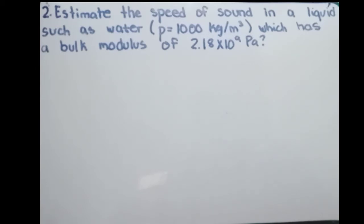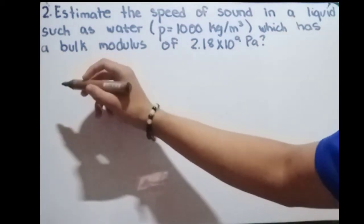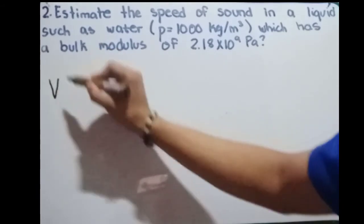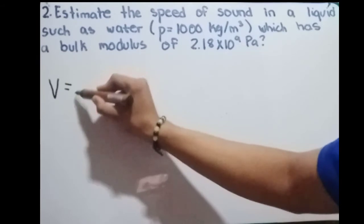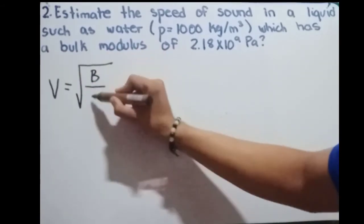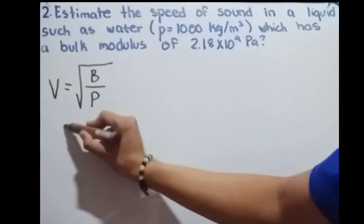Estimate the speed of sound in a liquid such as water, which has a density of 1000 kilograms per cubic meter and a bulk modulus of 2.18 times 10 raised to 9 pascals. The speed of sound in water or in liquid is equal to the square root of the bulk modulus over the density.